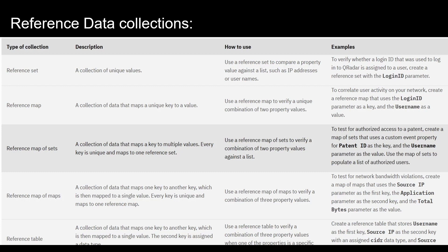Next, we have reference map of sets, which is a collection that maps a key to multiple values. Unlike a reference map where it's a unique key to a single value, here each unique key maps to one of the reference sets — that is, multiple values. For example, in a patent database, the patent ID is the unique key, but there could be multiple contributors or usernames mapped to a single patent ID.